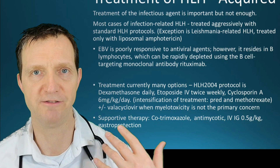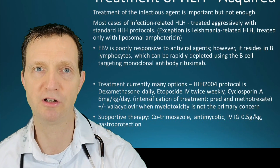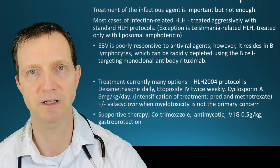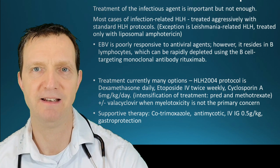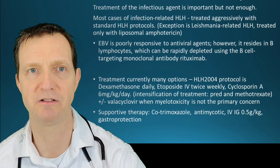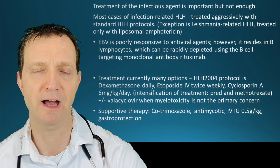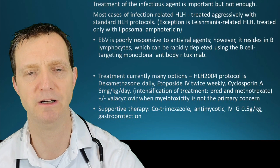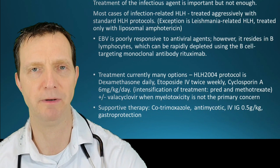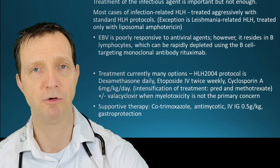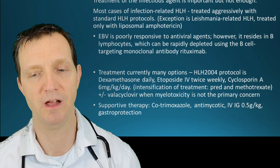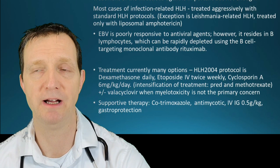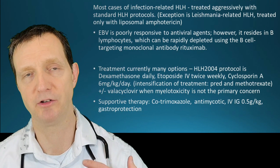Treatment options include the HLH-2004 protocol: dexamethasone, etoposide twice weekly, and cyclosporine A at 6mg per kg daily. Intensification of treatment may require methotrexate plus or minus valaciclovir, only when myelotoxicity is not the primary concern. Supportive therapy includes co-trimoxazole to protect the lungs from infection and a proton pump inhibitor as a gastroprotectant given all the steroids.